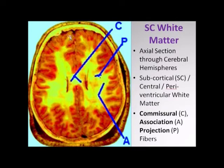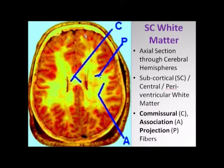When we take an axial section through the brain, we see first a thin rim of gray matter, which is referred to as the cortex, the cerebral cortex.